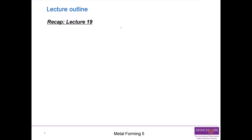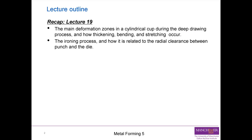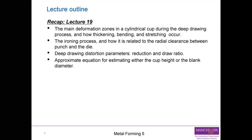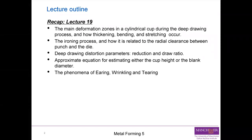Let's recap on what was in lecture 19, which was part 1. You covered the main deformation zones in a cylindrical cup during the deep drawing process, and how thickening, bending, and stretching occur. You talked about the ironing process and how it is related to the radial clearance between punch and die. Deep drawing distortion parameters such as reduction and draw ratio were covered, along with approximate equations for estimating cup height or blank diameter. Phenomena such as earring, wrinkling, and tearing were also mentioned.